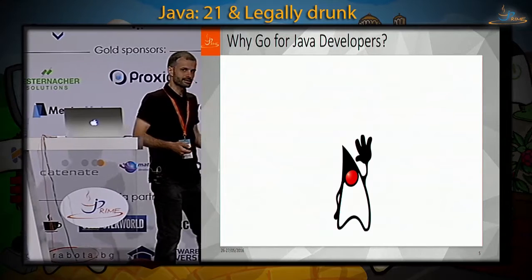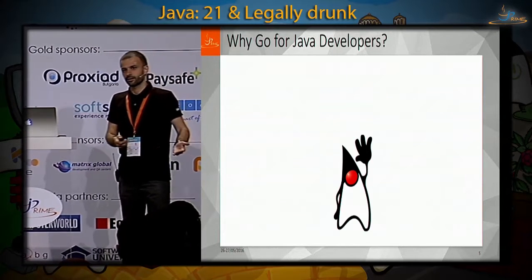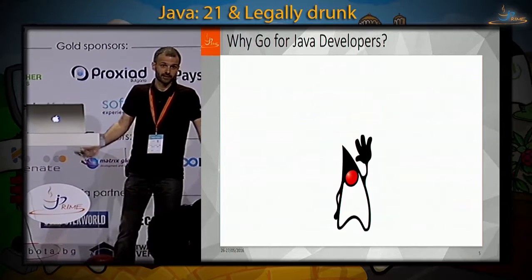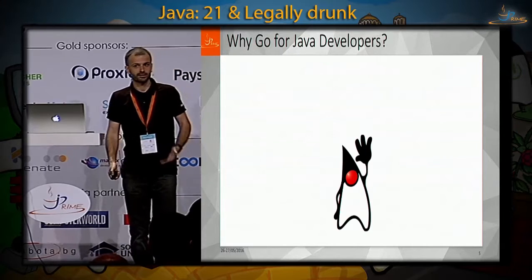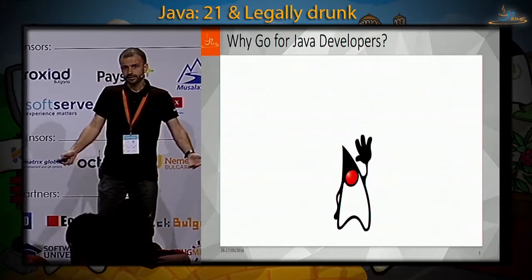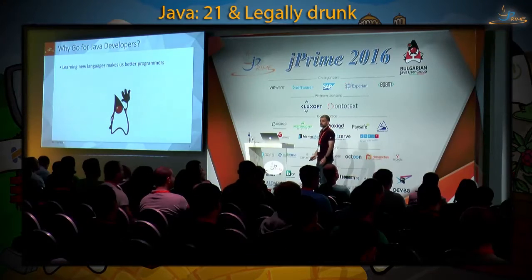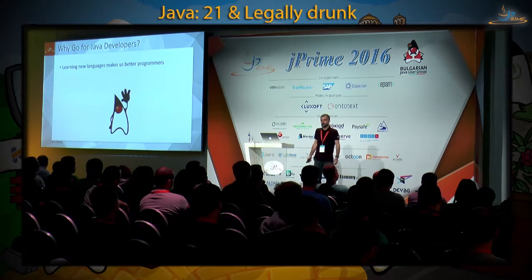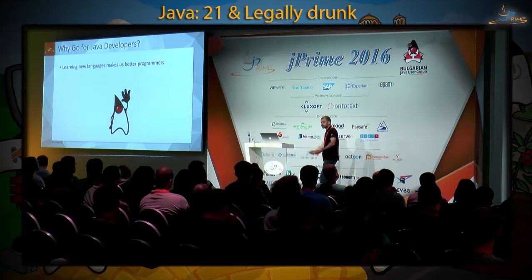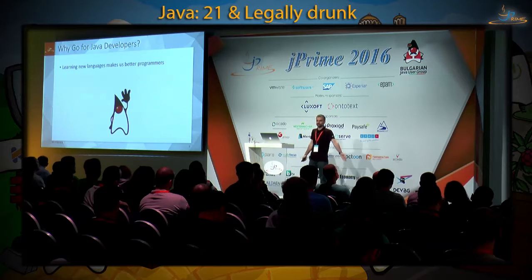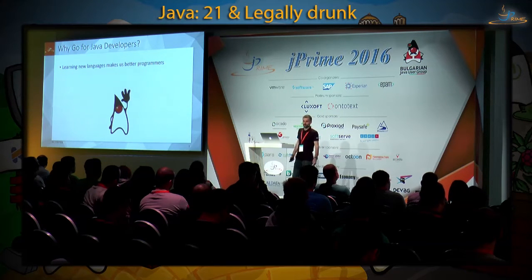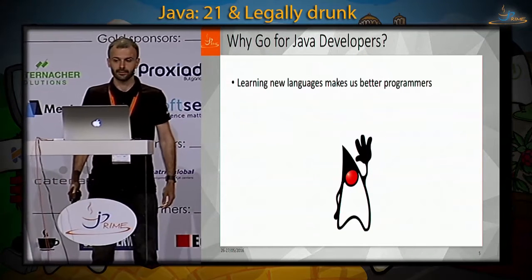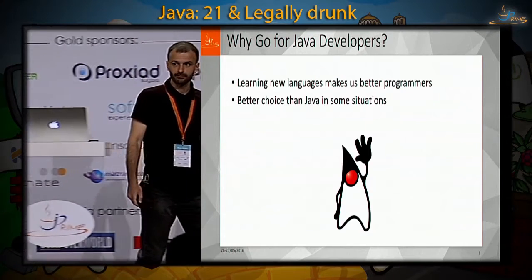Why Go for Java developers? After all, Java is number one in all possible rankings and unlikely to be replaced anytime soon. I see three possible reasons. First, I strongly believe that learning new programming languages makes us better programmers in whatever language we choose to code in. I strongly recommend looking at other programming languages — not only Go but also Scala, Kotlin, and others — because this really makes us better programmers independently of which language we decide to code in.